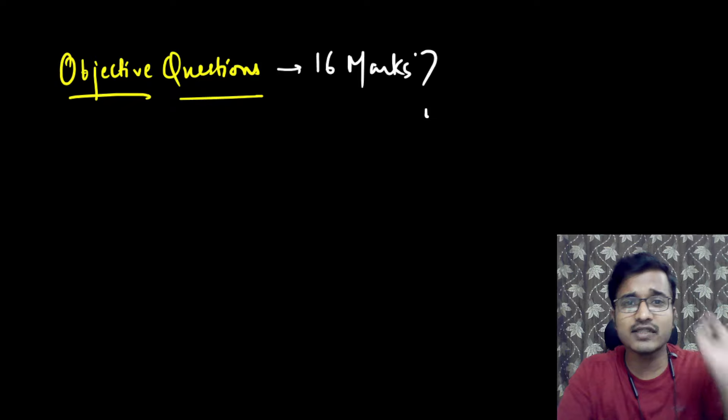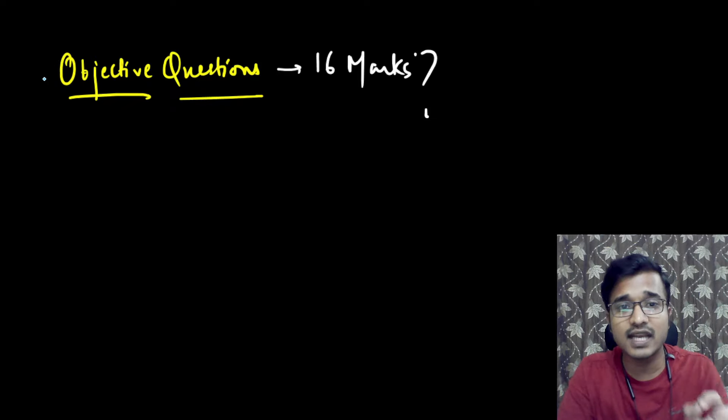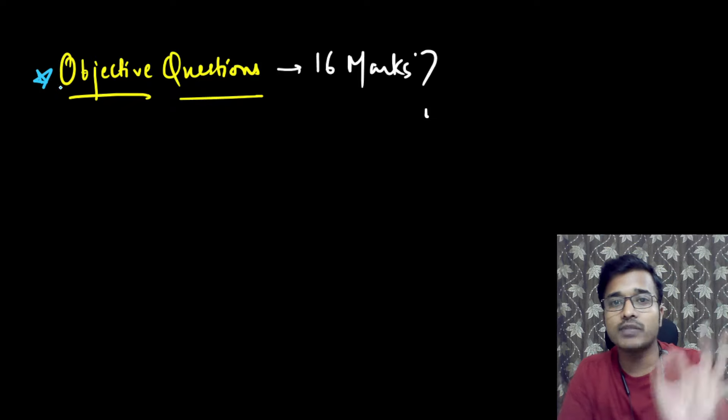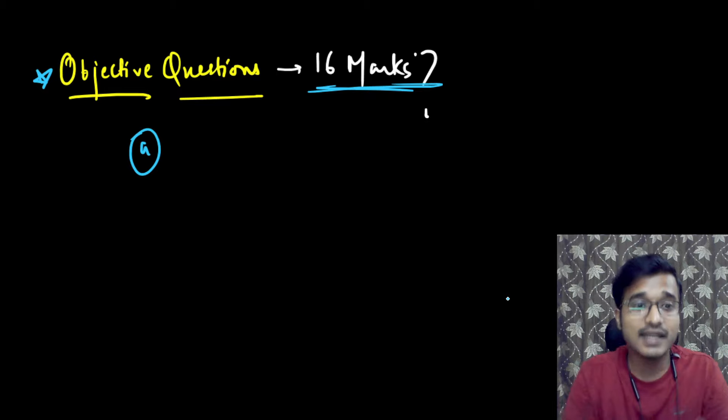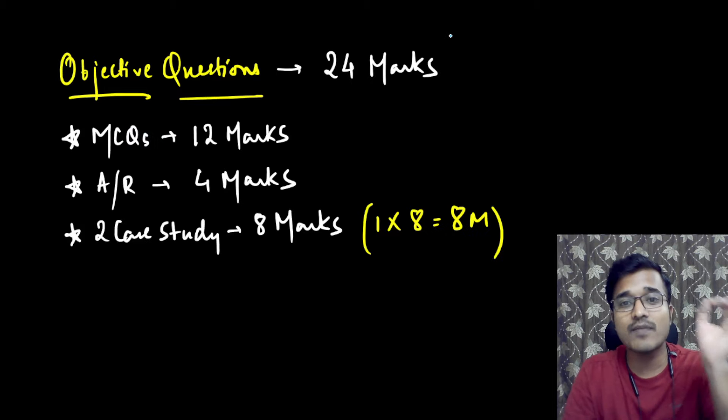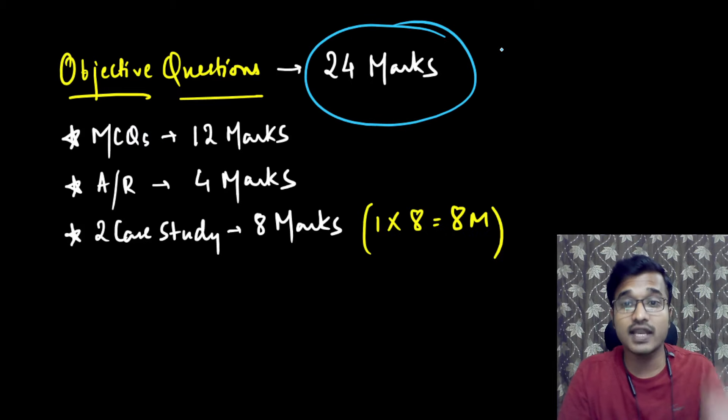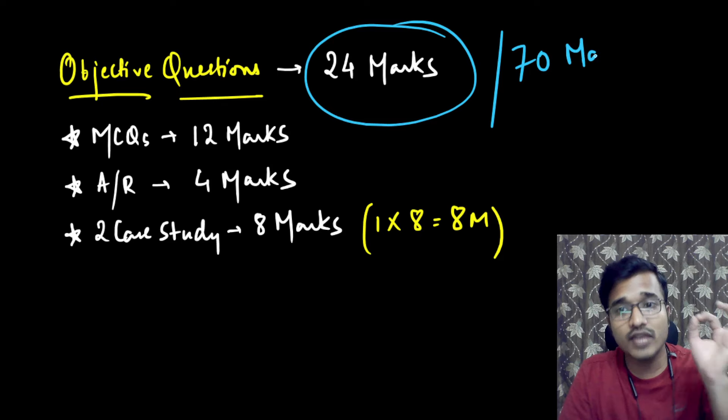So the first thing is, which mistake you commonly do, is that your objective questions, in which you have written options, they are only 16 marks. So here I am going to clear this for some of you. This is not 16 marks, but in paper, 24 marks out of 70 marks. So keep your attention.